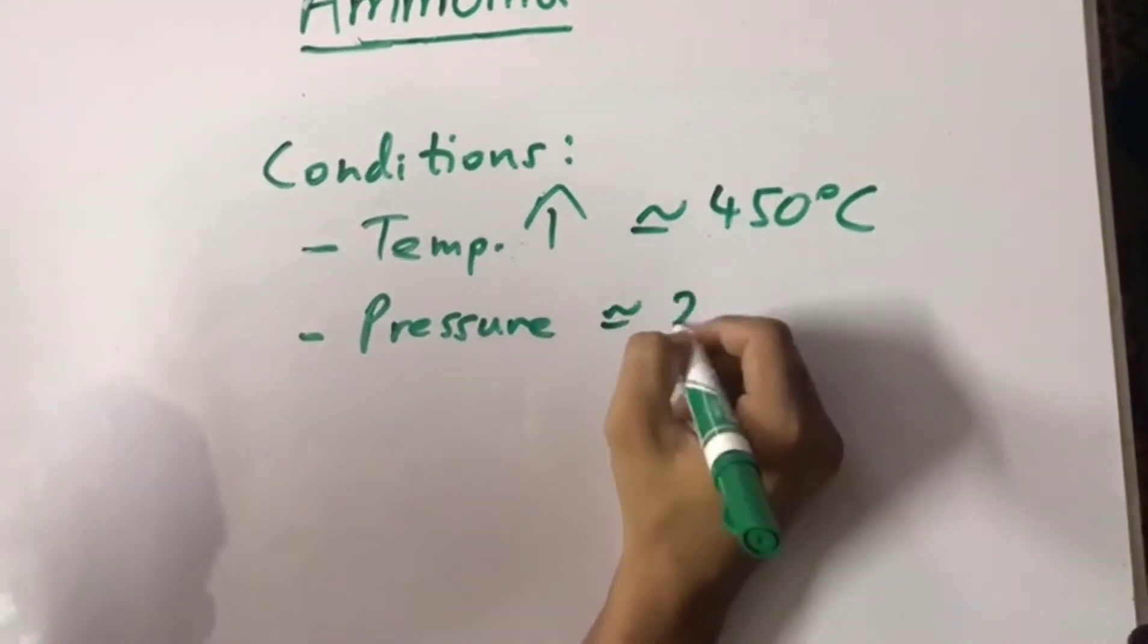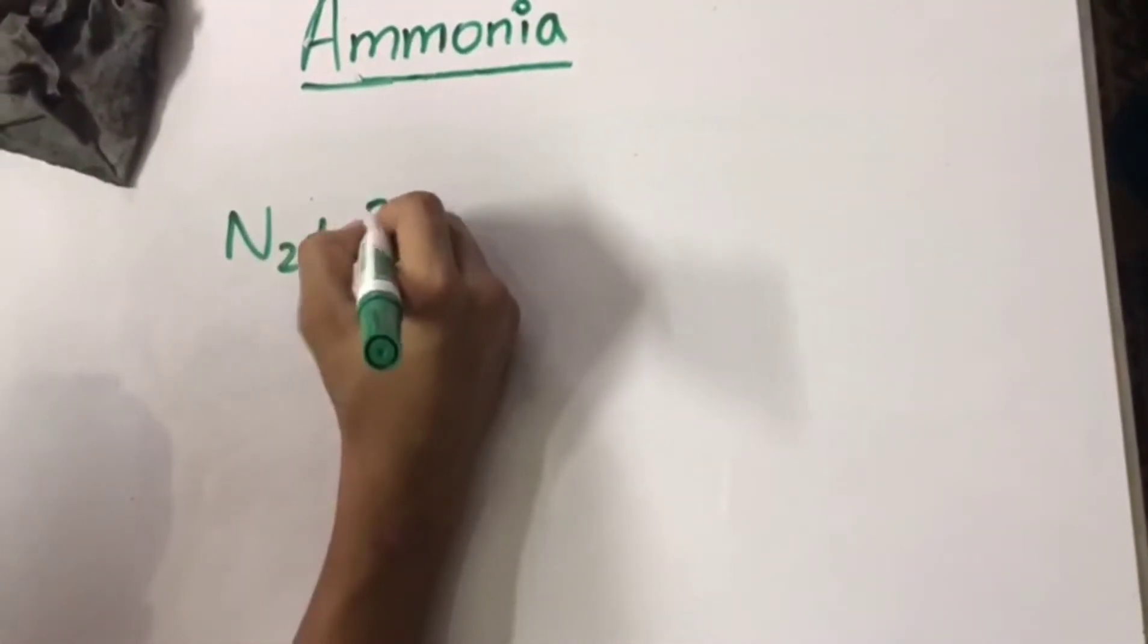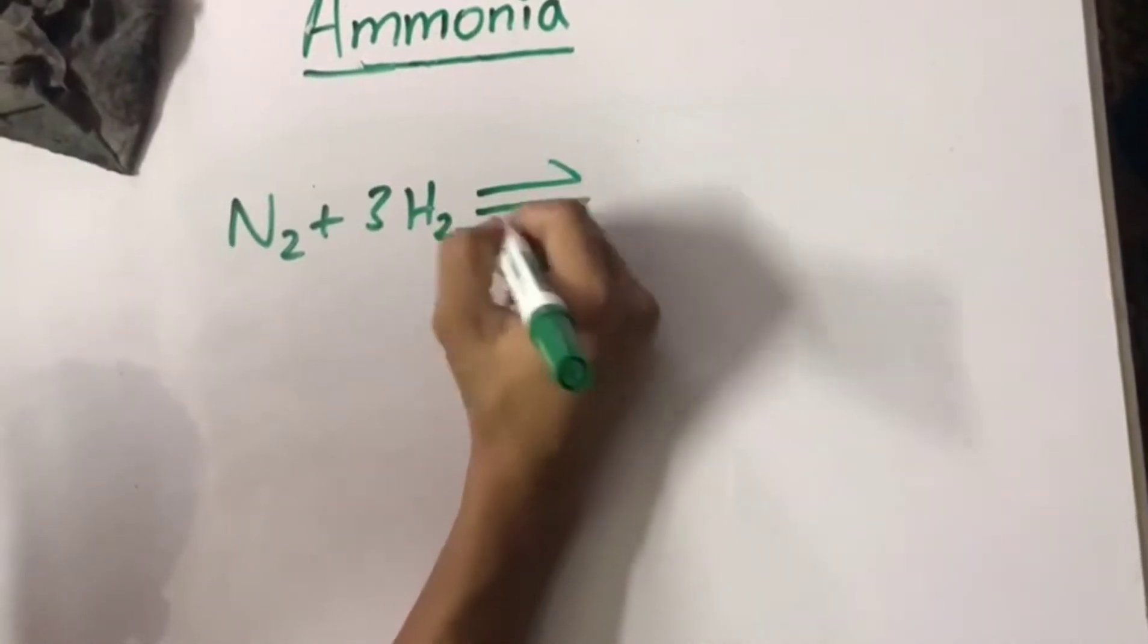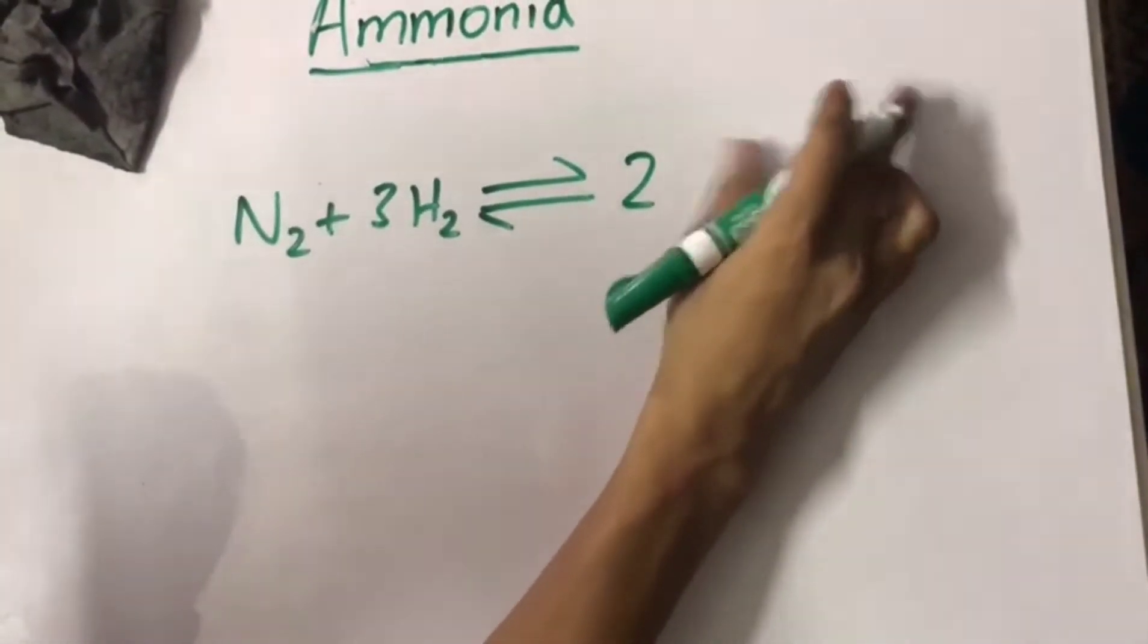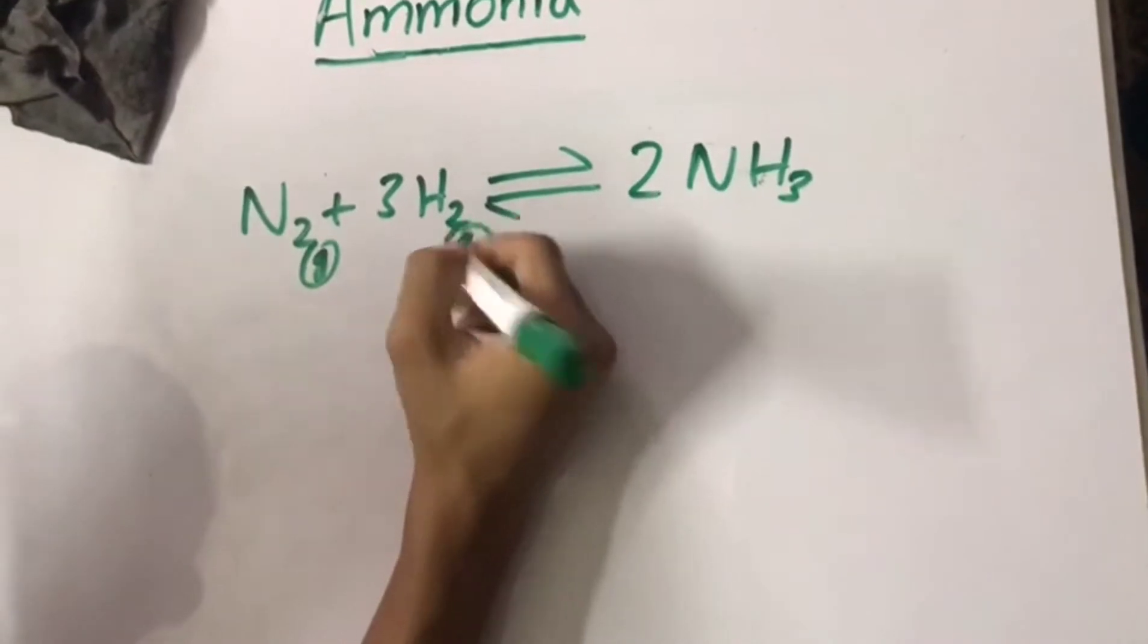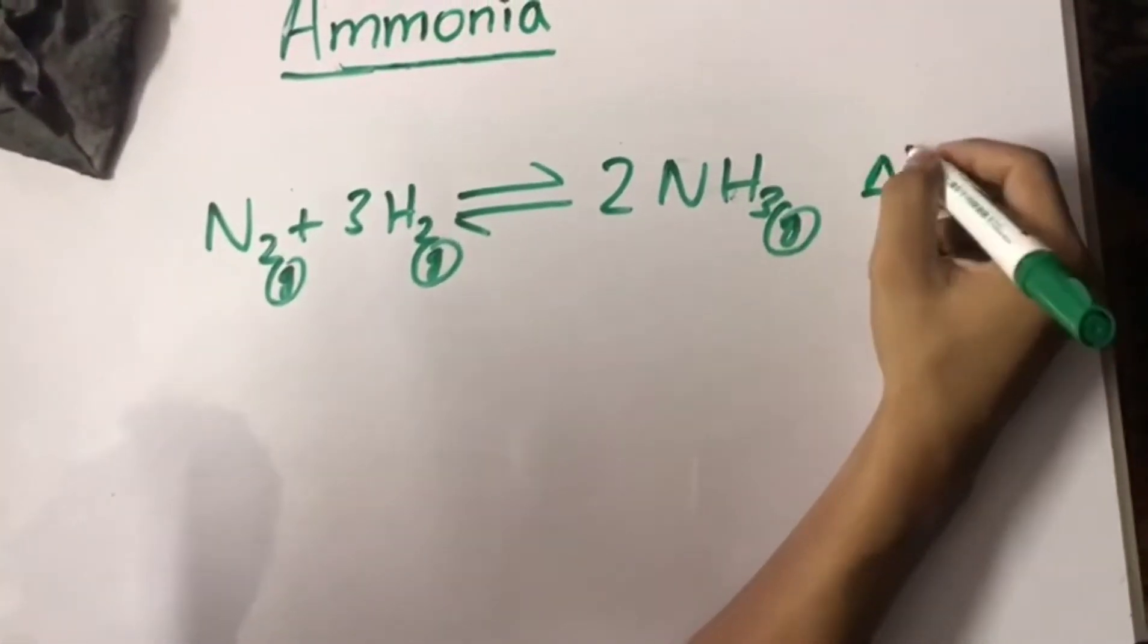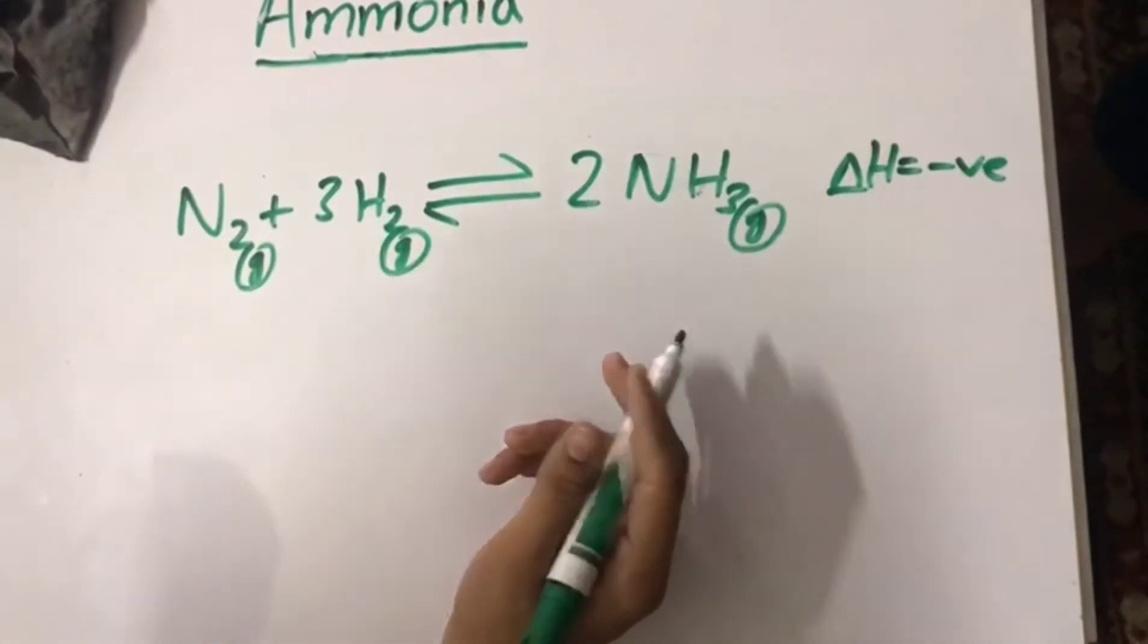Approximately 2 moles of nitrogen plus 3 moles of hydrogen produce 2 moles of ammonia. These are all gases. And the enthalpy change of the reaction is negative, that means that the forward reaction is exothermic.